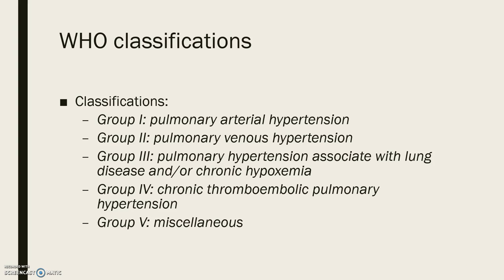The World Health Organization has created classifications. Group 1 is pulmonary arterial hypertension and includes idiopathic primary pulmonary hypertension, drug-induced, as well as conditions associated with HIV, collagen disorders, and portal hypertension.